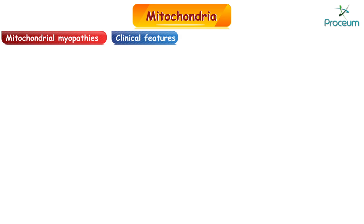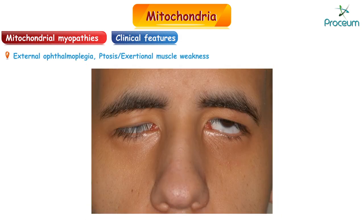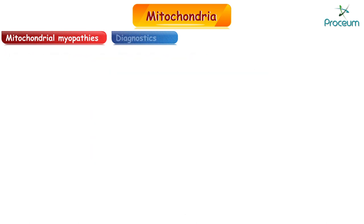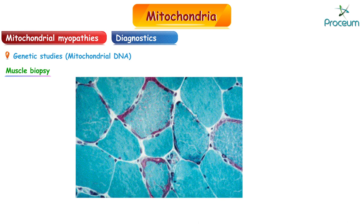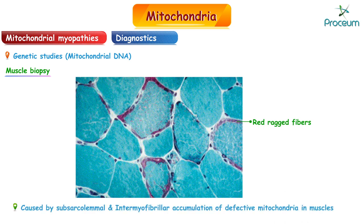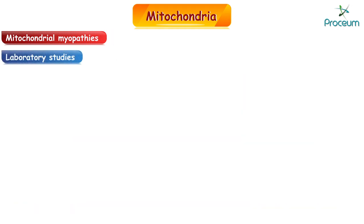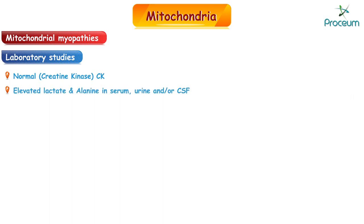Common clinical features include external ophthalmoplegia, ptosis, and/or exertional muscle weakness. Diagnostics include genetic studies including mitochondrial DNA and muscle biopsy. Immunohistochemistry typically shows ragged red fibers, caused by subsarcolemmal and intramyofibrillar accumulation of defective mitochondria in muscles. Laboratory studies show normal CK and elevated lactate and alanine in serum, urine, and/or CSF. Treatment is mainly supportive.